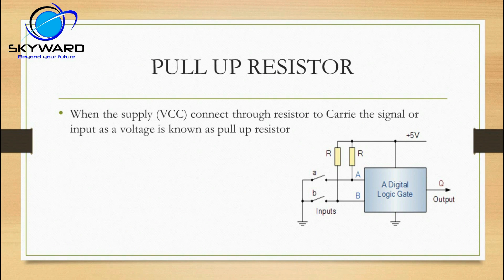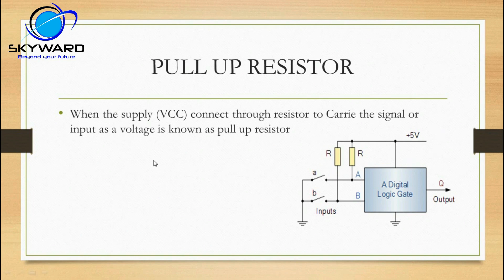Next is the pull-up resistor. A pull-up resistor means if a resistor is connected in any signal or voltage path and also connected to a voltage source, that is called a pull-up resistor. For example, if 5 volt is connected through a resistor to a signal path with points A and B, that is a pull-up resistor. Remember: if any extra voltage source is connected through a resistor to any channel, it is known as pull-up.